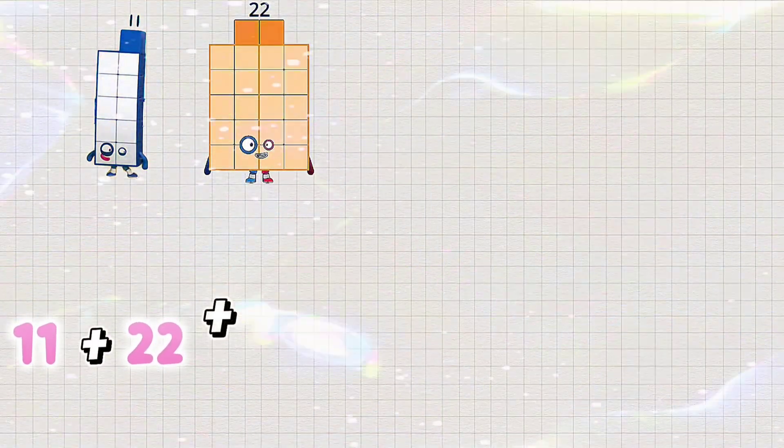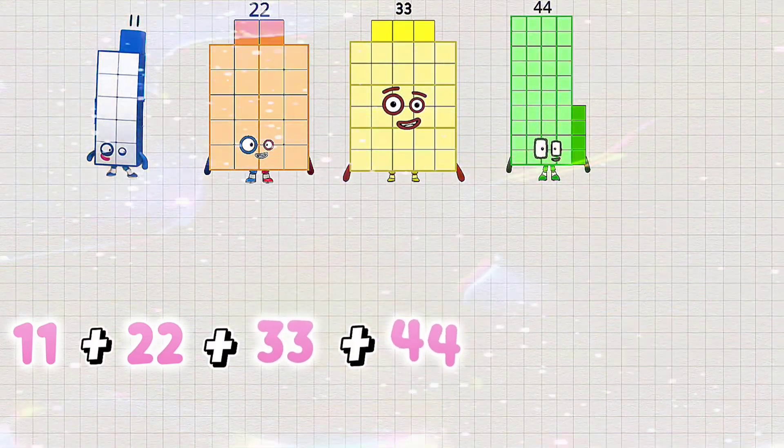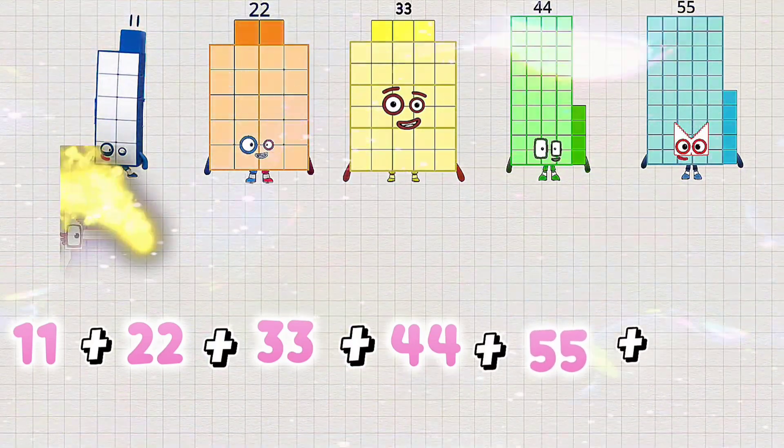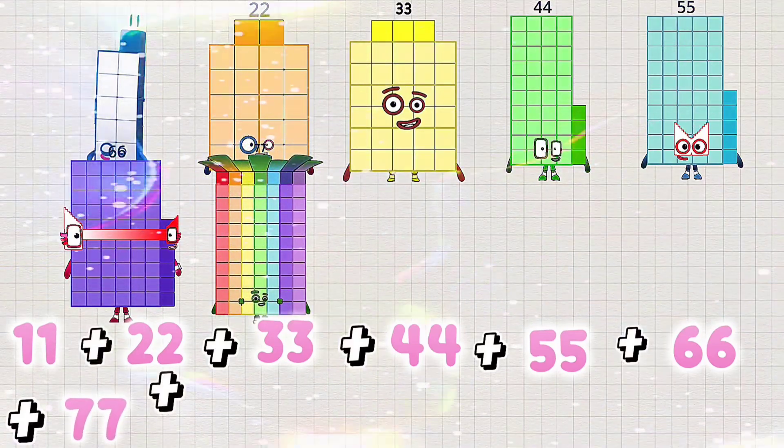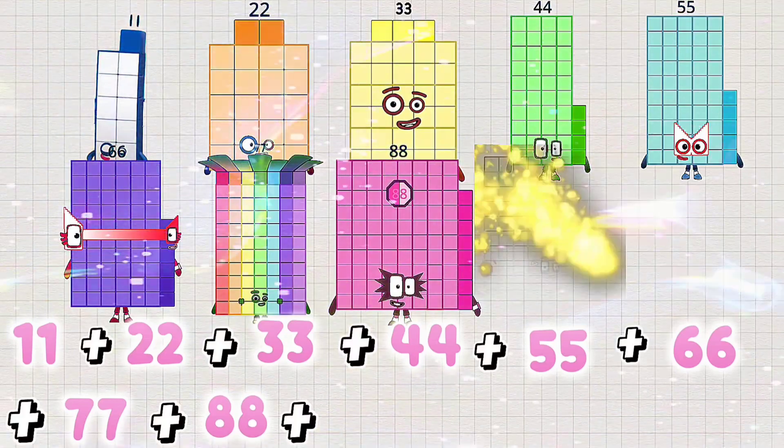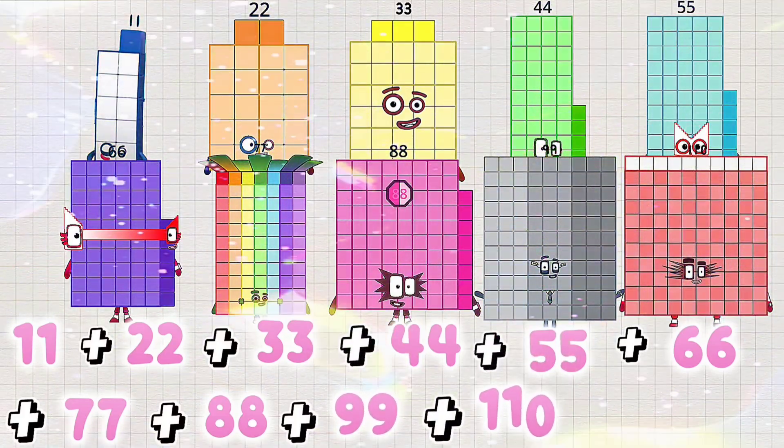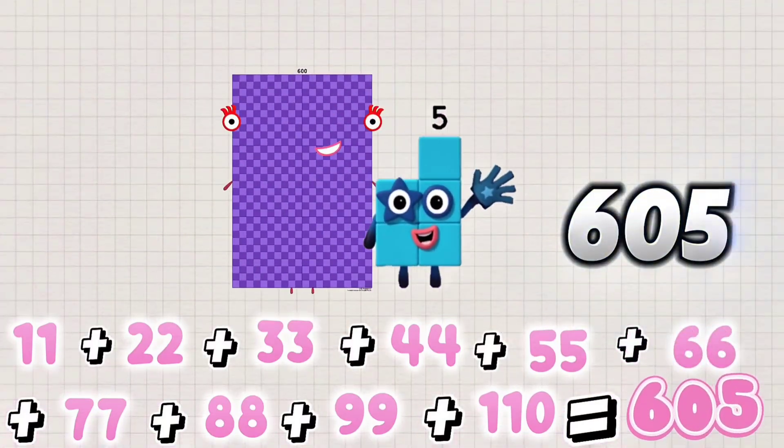Let's go. 11 plus 22 plus 33 plus 44 plus 55 plus 66 plus 77 plus 88 plus 99 plus 110 is equals to 605.